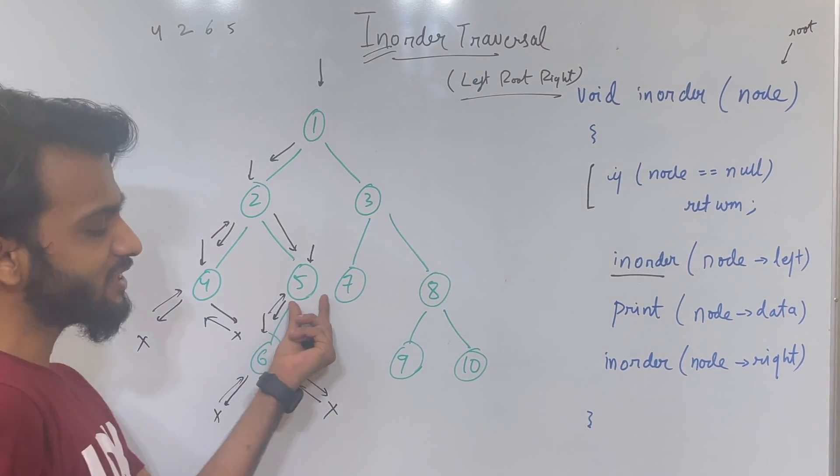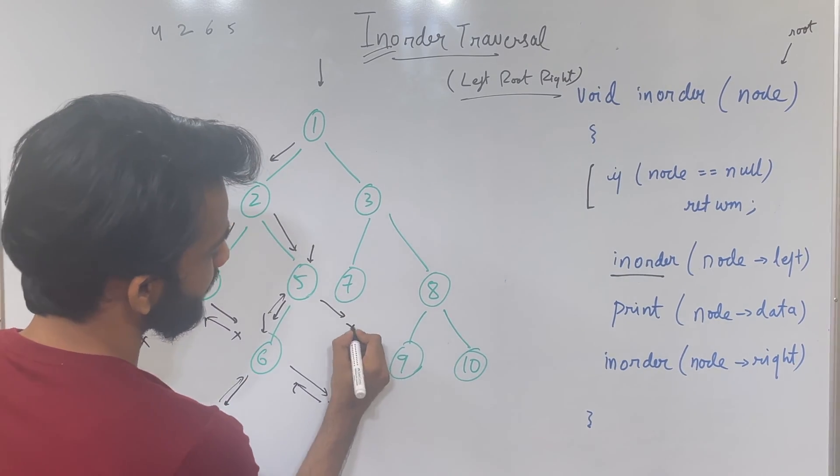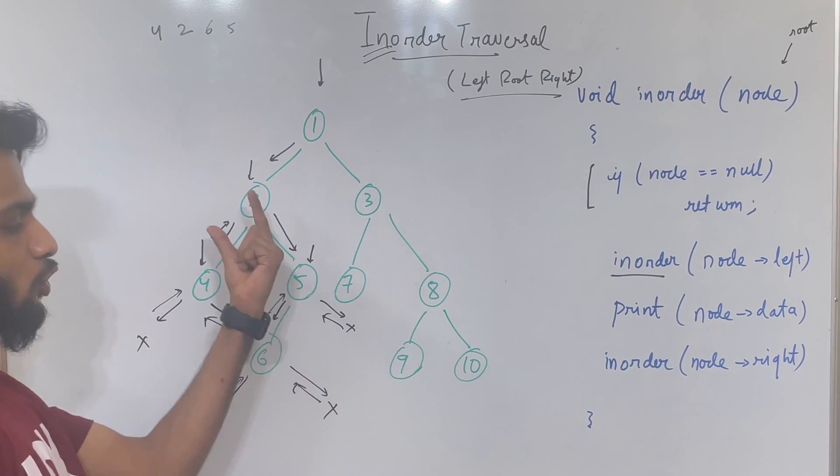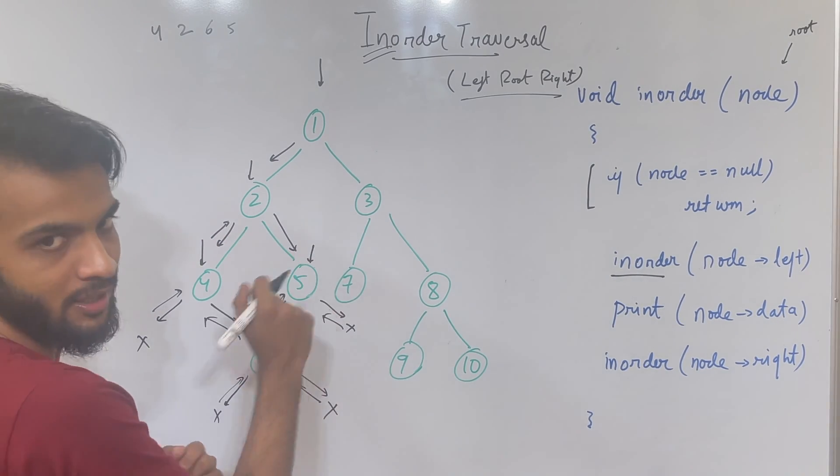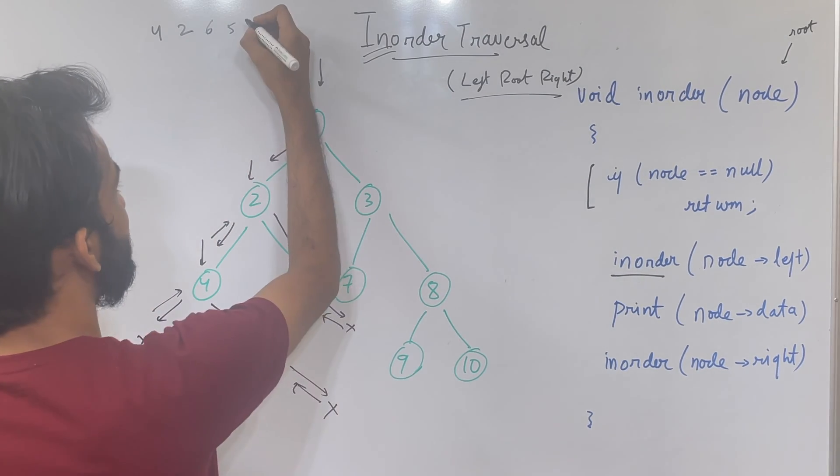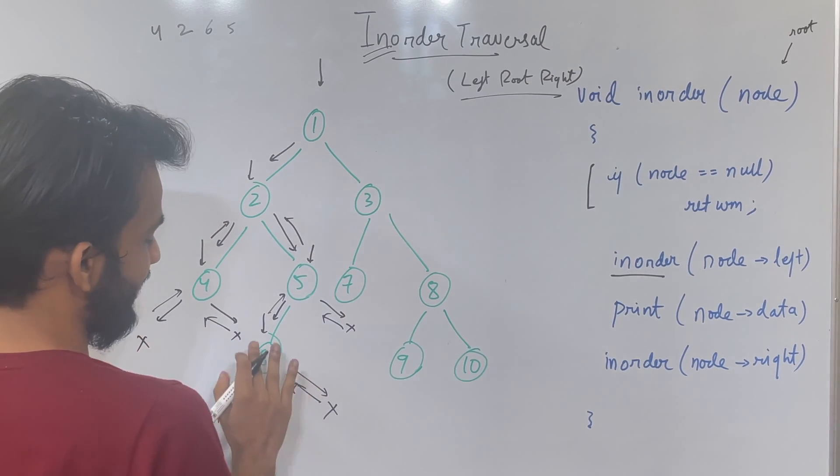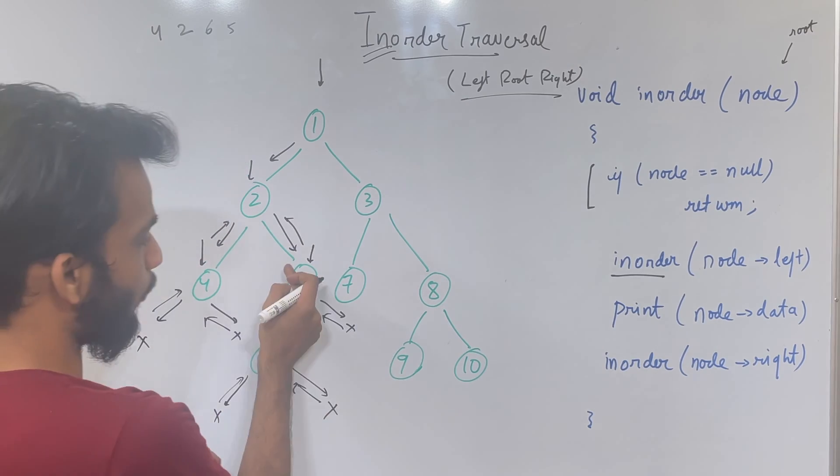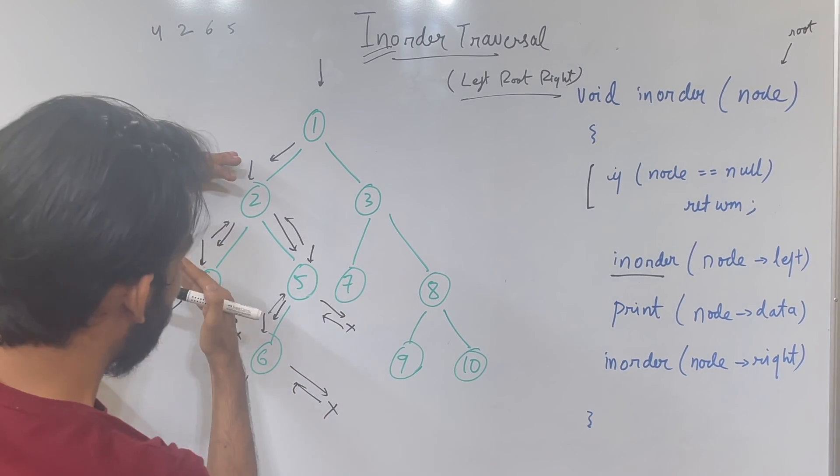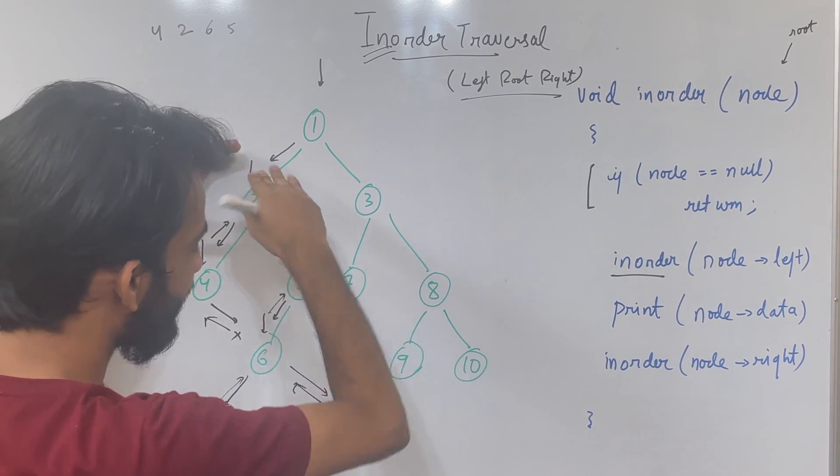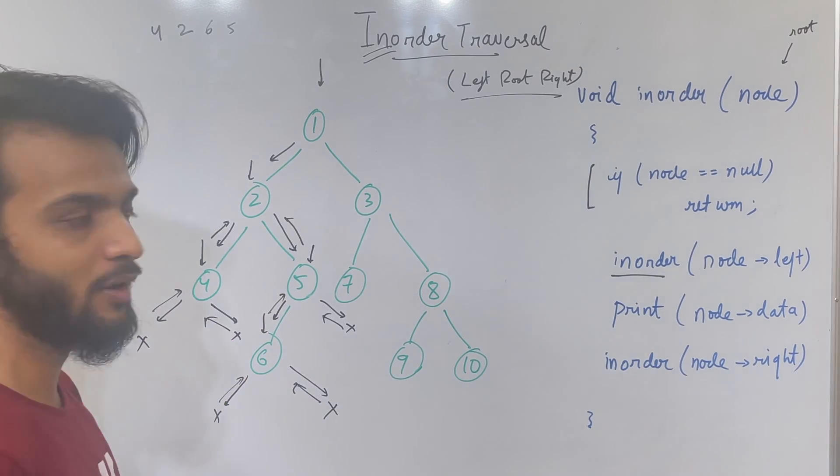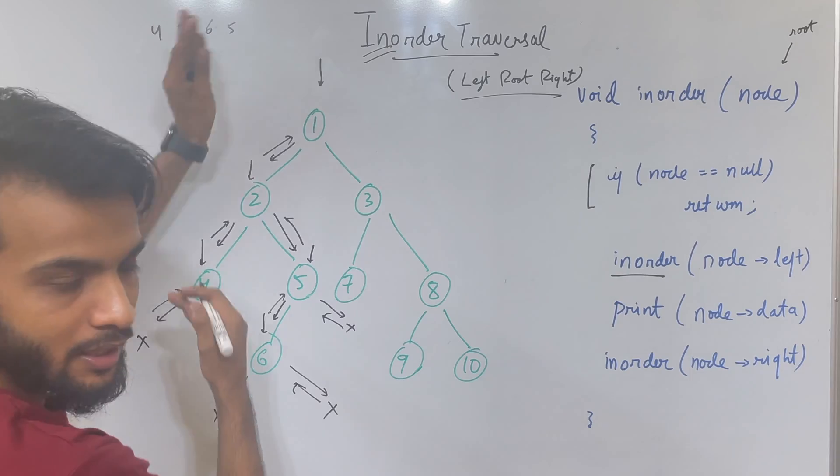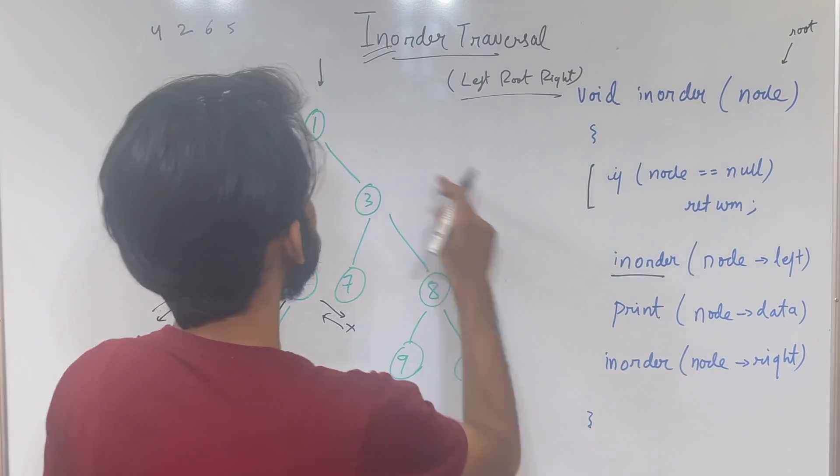Once it is printed, it will go to the right. Again it will find null. It will go back. Now when it goes back, there is a 5. So what it will do is, it will simply go back because left is over, printing is over, right is over. Right. So go back. So for 2, left is over, printing is over, right is over. So can I say 2 is also over? So I will now go back. So for 1, left is over, came back. So the next step is print. So 1 will be printed.